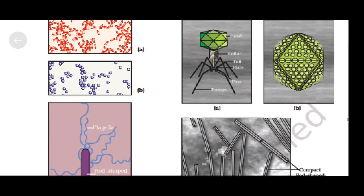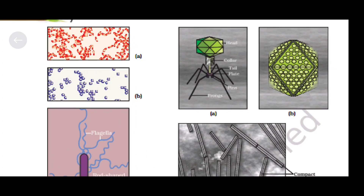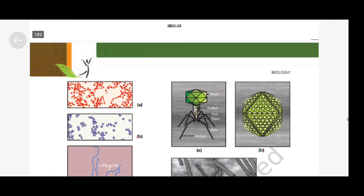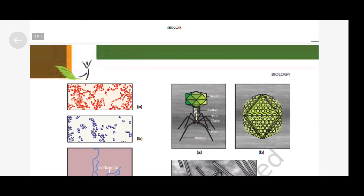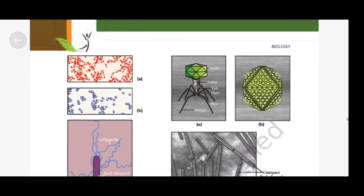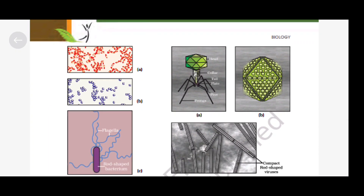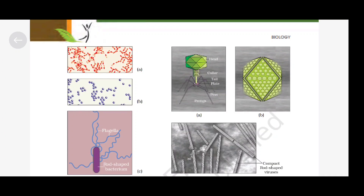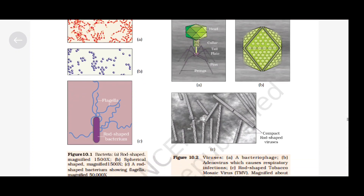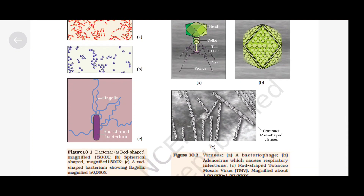Here you can see the diagram. These diagrams are important as questions may be asked. Just go through the diagram — rod-shaped bacteria, cocci and all. So just go through it.